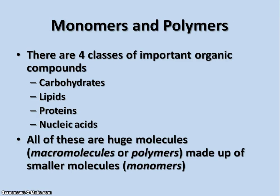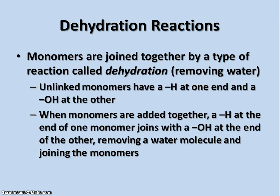There are four main classes of important organic compounds: carbohydrates, lipids or fats, proteins, and nucleic acids. All of these are very large molecules — there's a term called macromolecules. They're also called polymers, where 'poly' means many. They're made up of many smaller molecules called monomers — monomer being the single molecule. We're going to talk about each one of these classes of macromolecules in turn, but first let's talk about how they form those big, huge molecules.